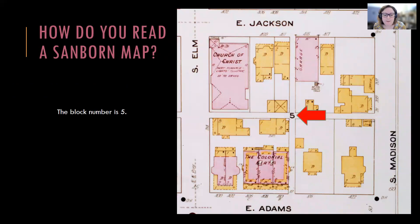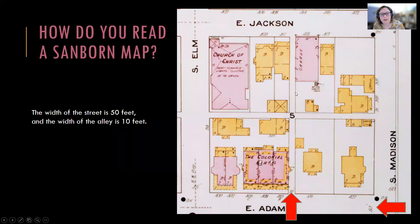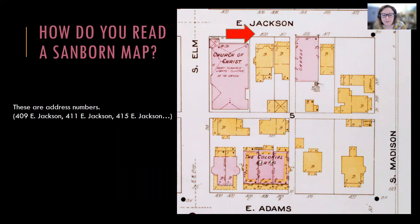Let's look at a city block. The bold number in the center of this city block tells me this is block number five. The bold names around the block are the street names — this block is bound by East Jackson, South Elm, East Adams, and South Madison. The two smaller numbers in the street and in the alley tell me the street is 50 feet wide and the alley is 10 feet wide. The series of numbers on the outer edge of the property boundaries are the house or address numbers — for example, 409, 411, and 415 East Jackson. These help you identify a specific property and can help you identify a change in address.